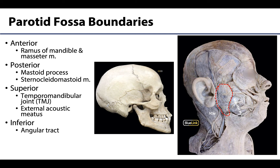The anterior boundary will be both the ramus of the mandible — which is this vertical portion of the mandible — and the masseter muscle, which is going to lie just superficial to the ramus of the mandible. You can actually palpate your masseter if you clench your teeth and feel over your mandible; you will be feeling that masseter muscle contracting.